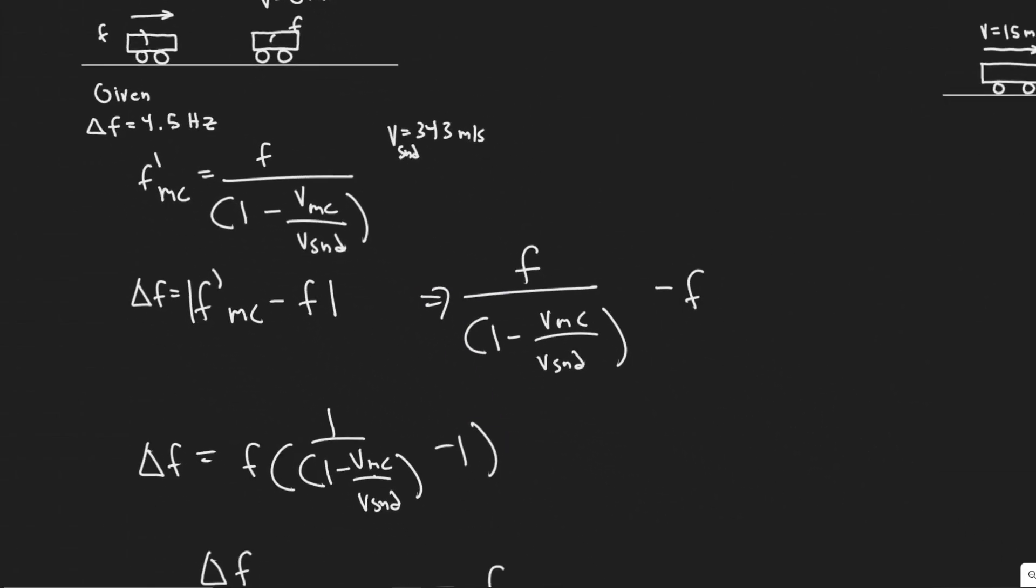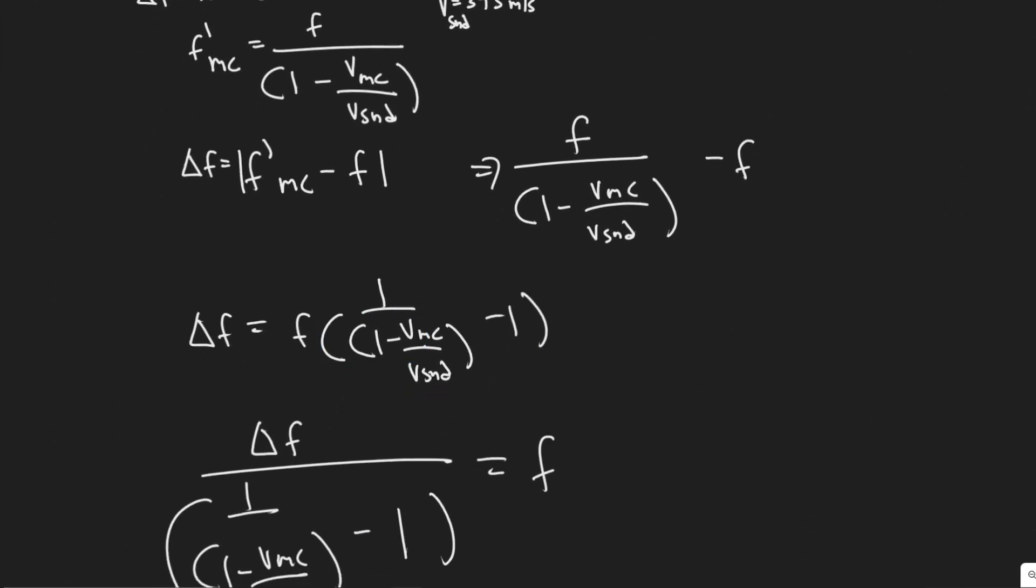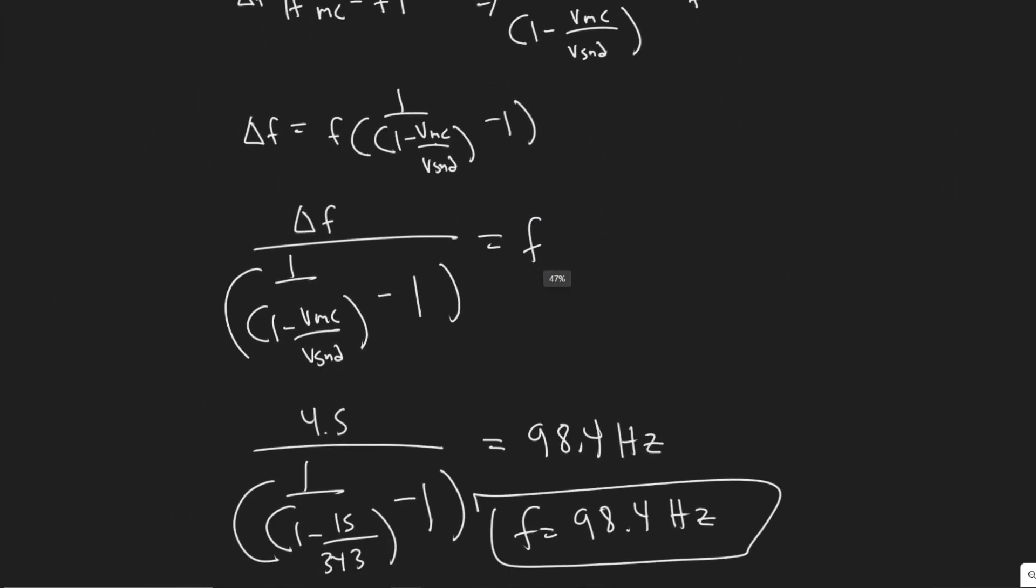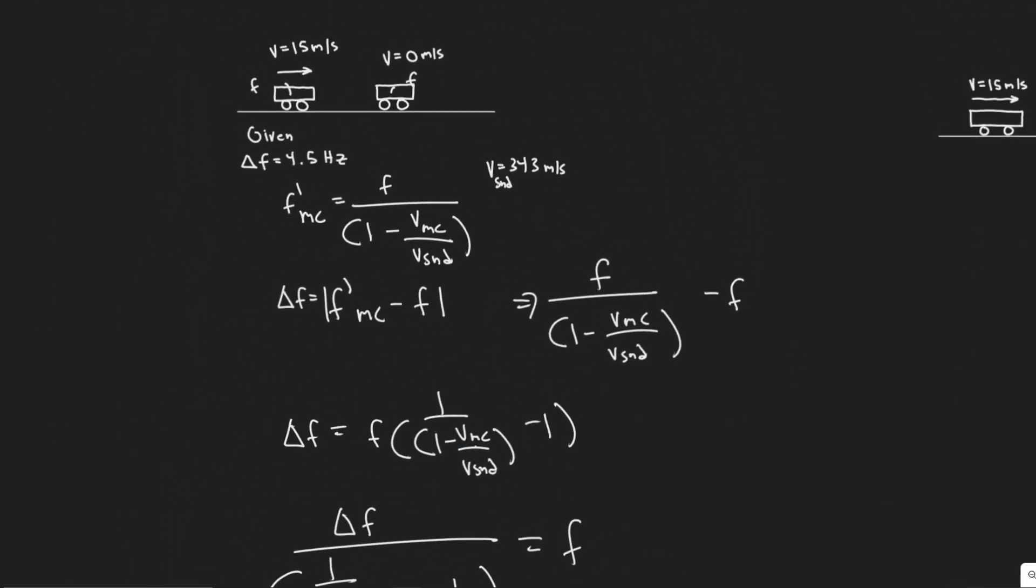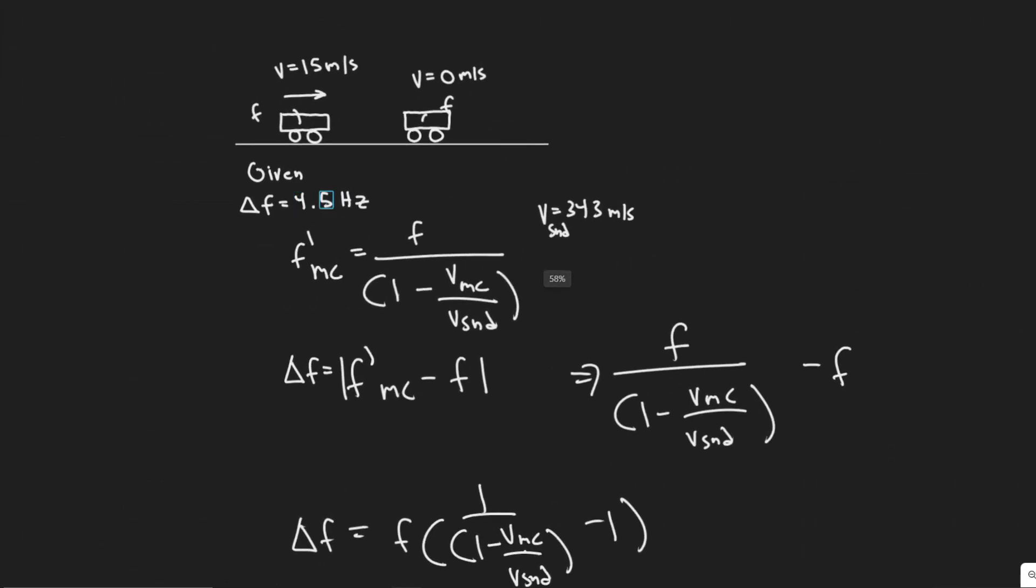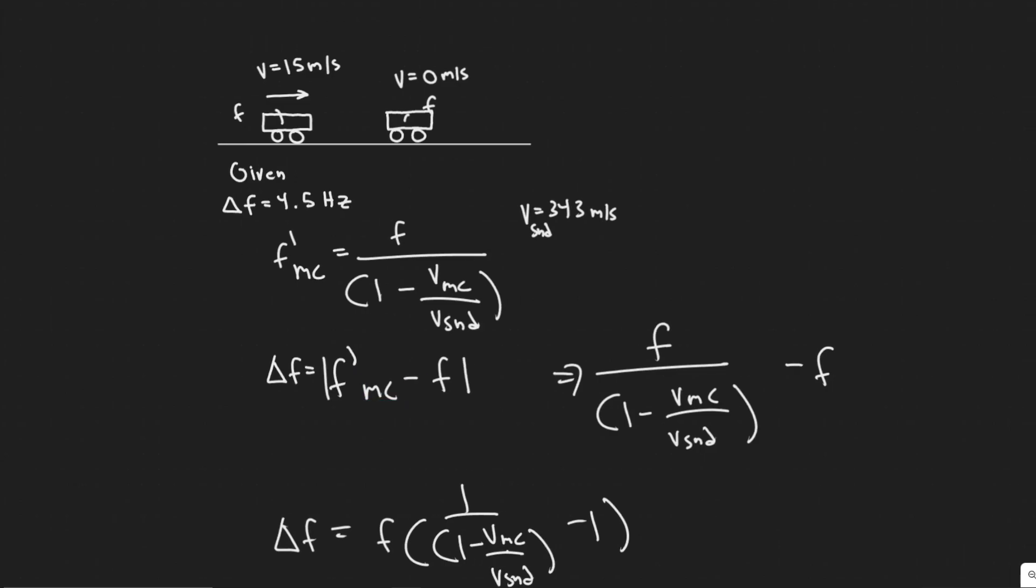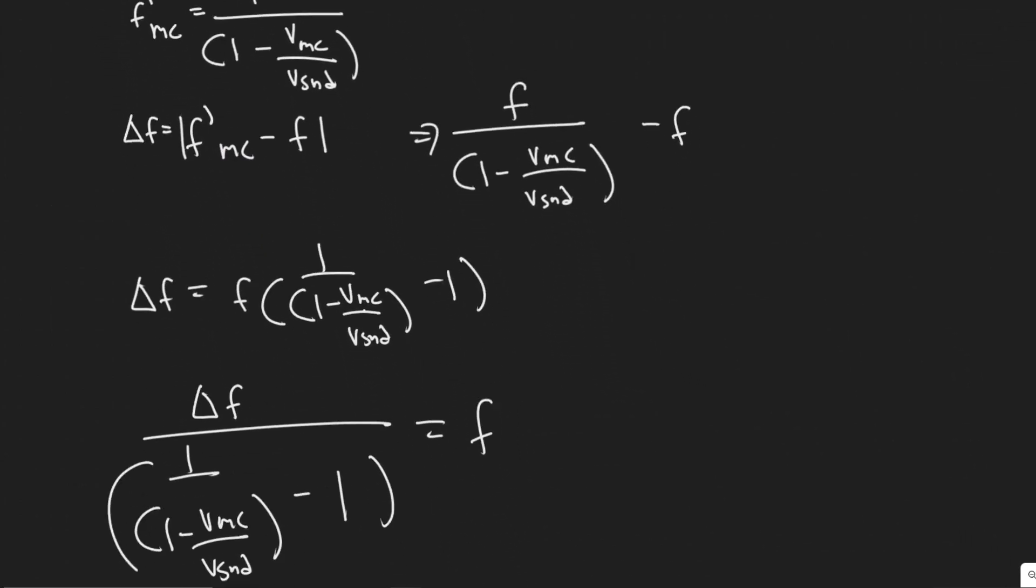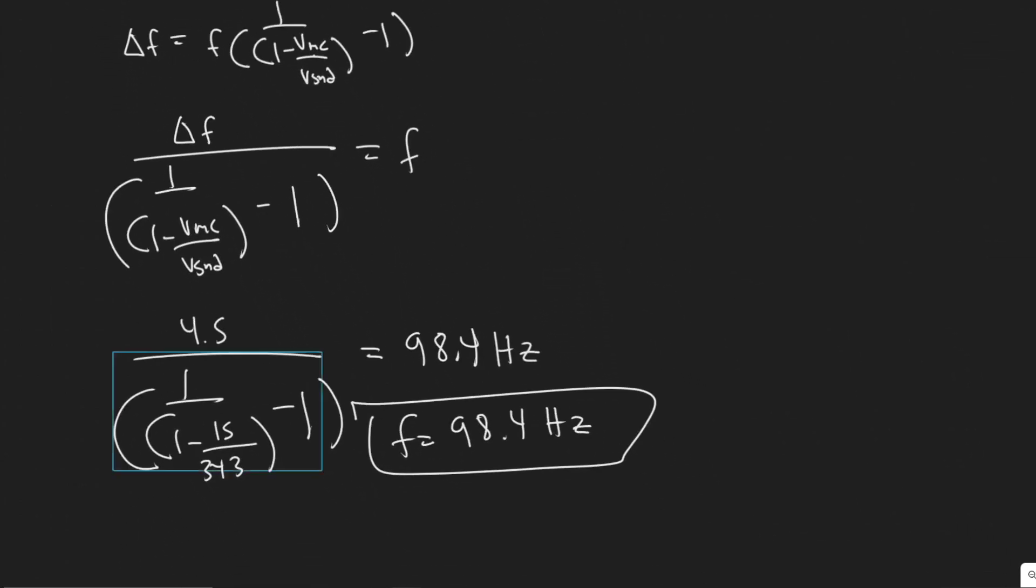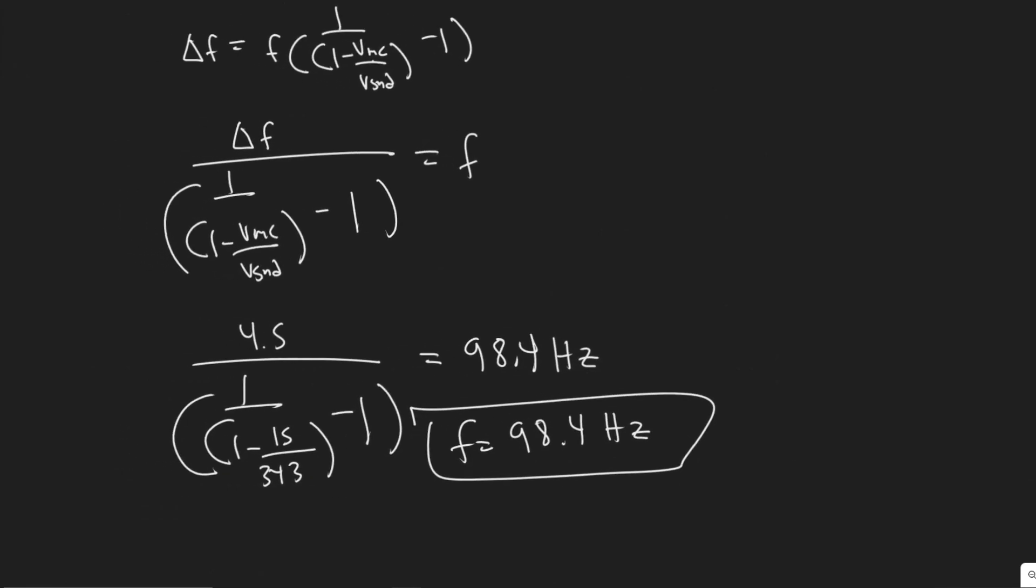And then we just plugged it in, we factored out the F to be able to solve. So basically the main takeaway from this problem is just knowing what beat frequency is, and then recognizing that it's the difference between interpreted versus the actual, and then you can just solve. So yeah, 98.4 hertz, that's going to be your answer. And hopefully you found this video useful.